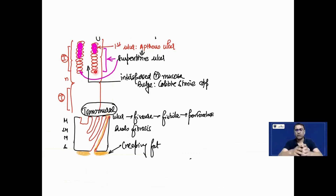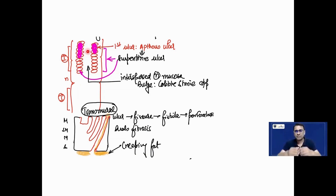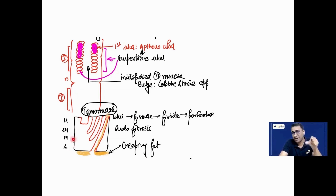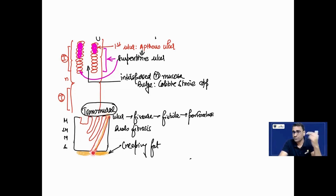Because the ulcer goes down into the mucosal surface and the surrounding normal interspersed mucosa bulges up, this produces what is called a cobblestoning appearance. In Crohn's, two things are very important: number one, it is transmural — full thickness involvement; and secondly, it is segmental involvement. What starts as a superficial ulcer goes deeper to form a fissure, then a fistula, and ultimately the entire thing perforates. When it perforates, the fats tend to creep out from this area, which is called creeping fat.